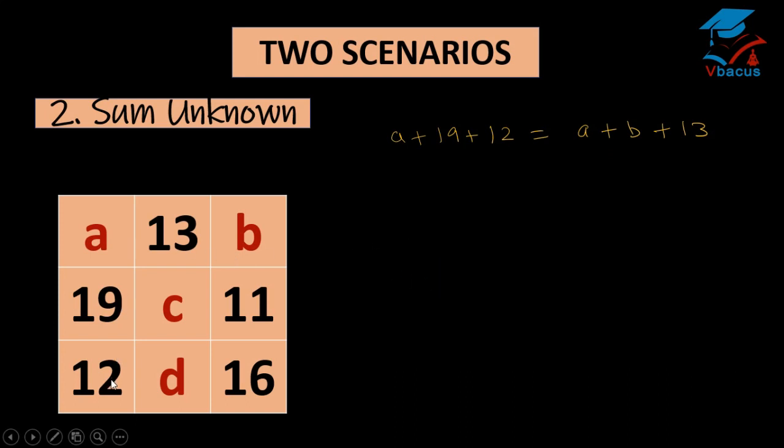A plus 19 plus 12 is equal to A plus B plus 13. So here we can cut A from both sides and we can write 19 plus 12 is equal to B plus 13. Now B plus 13 I have brought to left side and 19 plus 12 I have brought to right hand side. Find the value of B. B is equal to 19 plus 12 minus 13 that is 18.